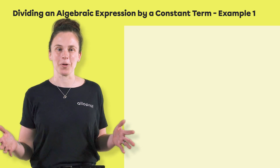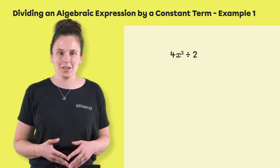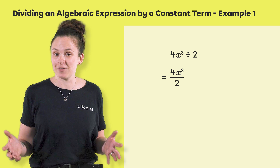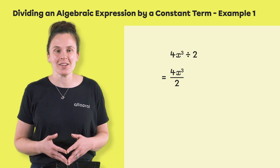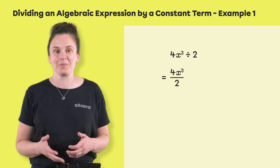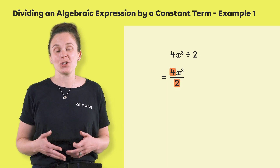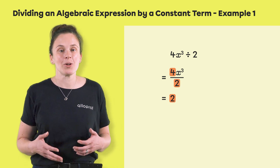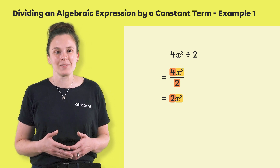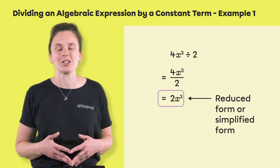Let's start with our first example: 4x³ divided by 2. We could rewrite the division as 4x³ over 2, since a fraction is a division. To divide a monomial by a constant term, we divide the coefficient of the monomial by the constant term. So we have 4 divided by 2, which equals 2. The variable x with exponent 3 remains the same. Therefore, the reduced or simplified form of the division is 2x³.